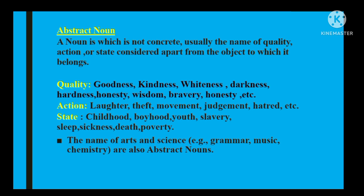Quality ke andar examples hain: goodness, kindness, whiteness, darkness, hardness, etc. Action ke examples hain: laughter, theft, movement, judgment, etc. Isi tarah state ki misal: childhood, boyhood, youth, slavery, sleep, sickness, death, waghaira. Abstract noun jis object se uska ta'lluq hota hai, use alag se consider karte hain — uska meaning apni jagah par mukammal hota hai lekin woh kisi noun ya object ki khasusiyat bhi hote hain at the same time.